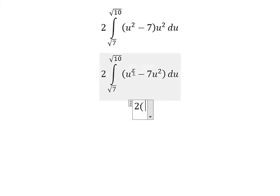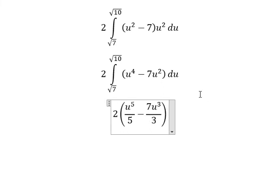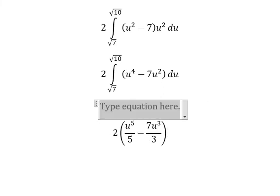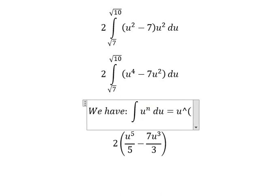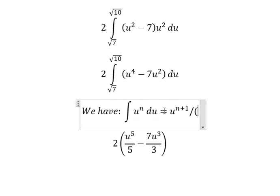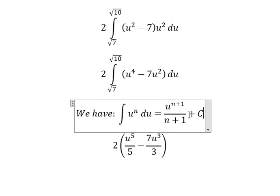For the integration of u⁴, we have u⁵ over 5. For 7u², we have 7u³ over 3. We apply the power rule formula: the integral of uⁿ du equals uⁿ⁺¹ over n+1 plus C.